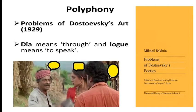Bakhtin focused his studies on the novel. A novel has one or more characters. They interact with each other. There is dialogue between them. Dialogue is a reciprocal relationship between two or more entities or people. 'Dia' means through and 'log' means to speak.